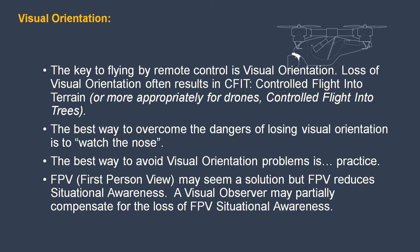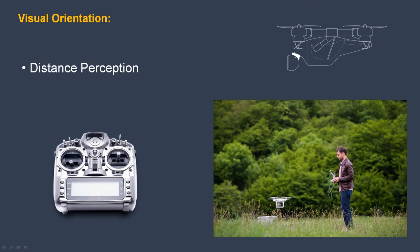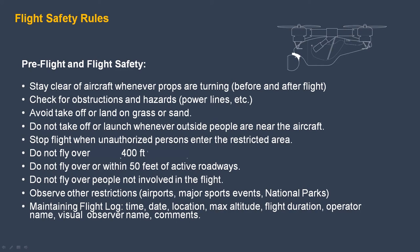FPV — first person view — may seem a solution, but FPV reduces situational awareness. A visual observer may partially compensate for the loss of FPV situational awareness. One important thing to consider is the matter of distance perception. When using simulator training, the first thing you have trouble with is figuring out where the drone is with respect to an obstacle. Trees have a habit of not being where you thought they were. Gaining that skill is a matter of practice, whether on the simulator or in the field. The nice thing about the simulator is you can hit reset and you don't have to replace any parts.